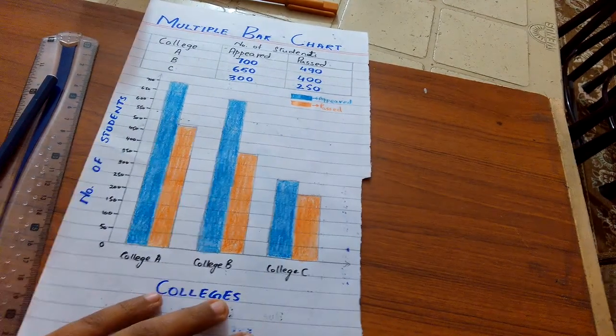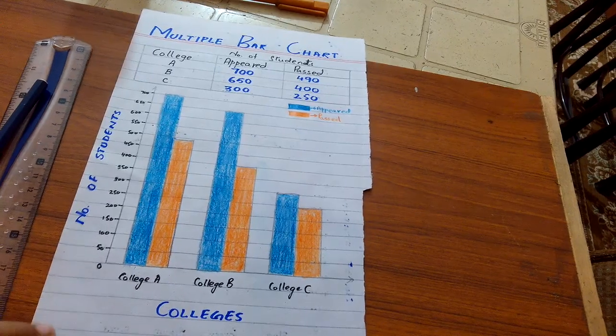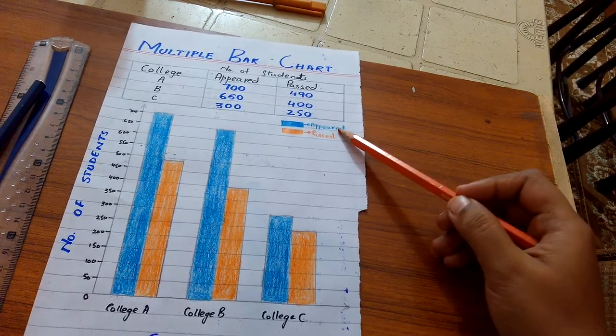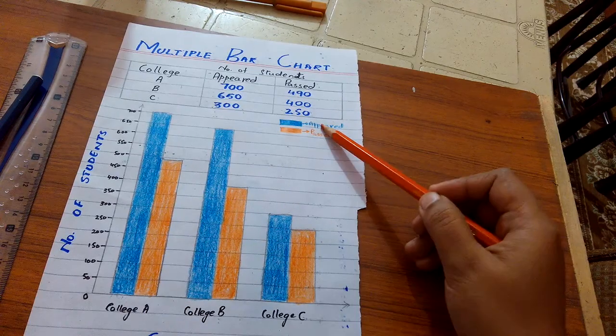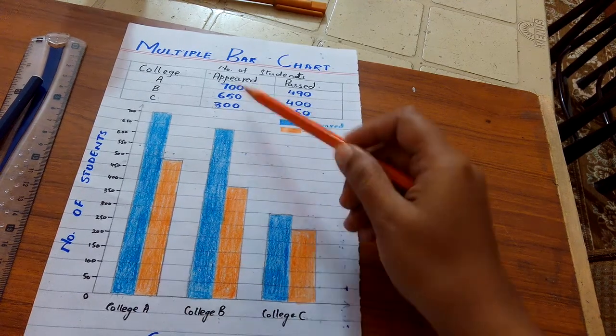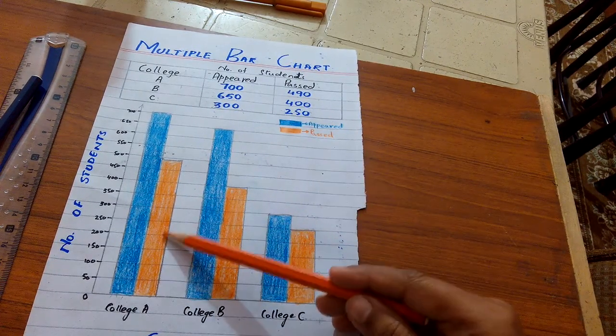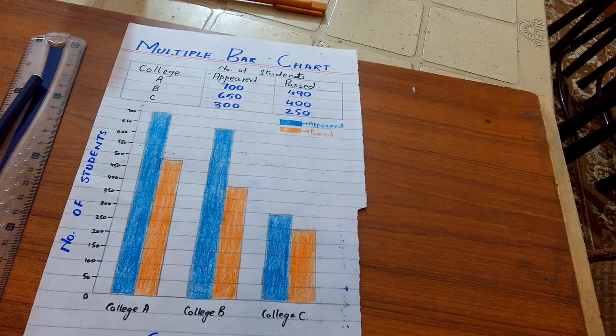So friends, our multiple bar chart is ready. And here I have also created a key which shows blue color represents students appeared in class, and orange color describes students who have passed the exams.